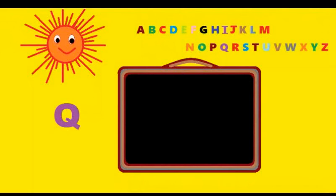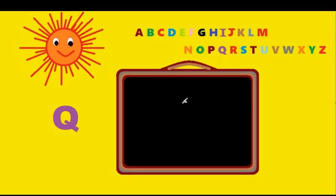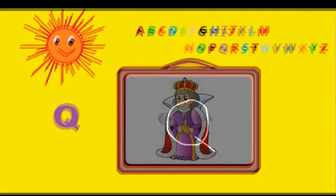Q. You just have to draw an O — draw a circle and give it a tail. That's Q. Q is for queen.